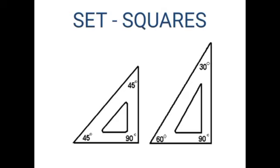Next, set squares. In geometrical box, there are two triangular shaped instruments called set squares. These are usually made up of thin transparent plastic sheet. In one, the angles are 30 degree, 60 degree, and 90 degree.